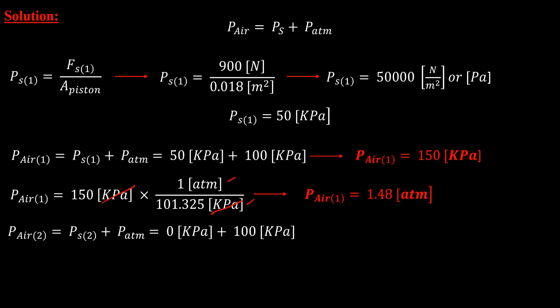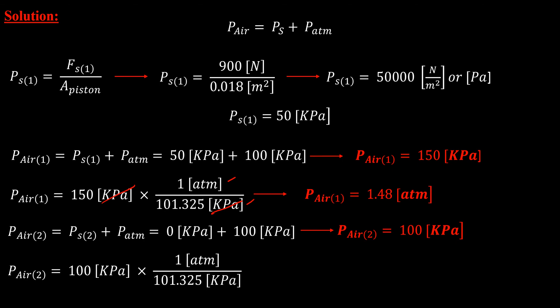For state two, the force of the spring is zero, so the pressure of the spring at state two is also zero. Therefore, the pressure of air at state two equals zero plus the atmospheric pressure of 100 kilopascal, giving us 100 kilopascal. Converting to atmosphere using the same conversion factor of one divided by 101.325 kilopascal, the pressure of air at state two is 0.98 atm. I hope you find this helpful. Thank you very much.